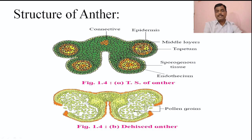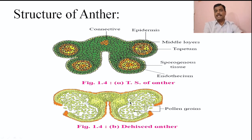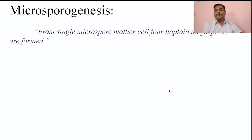Each pollen mother cell undergoes reduction division to produce four haploid pollen grains. So from one pollen mother cell, four pollen grains are produced. If there are 10 pollen mother cells, 40 pollen grains are produced. The process of formation of pollen grains from the pollen mother cell is known as microsporogenesis.